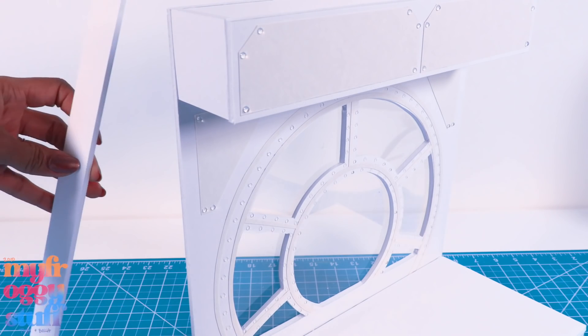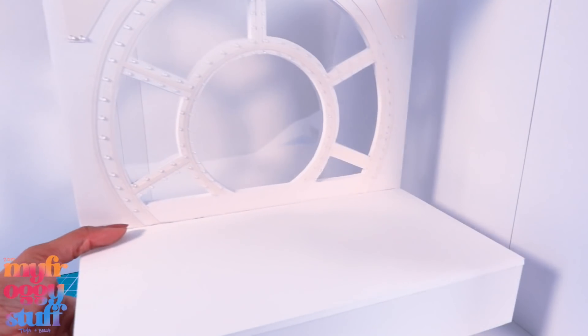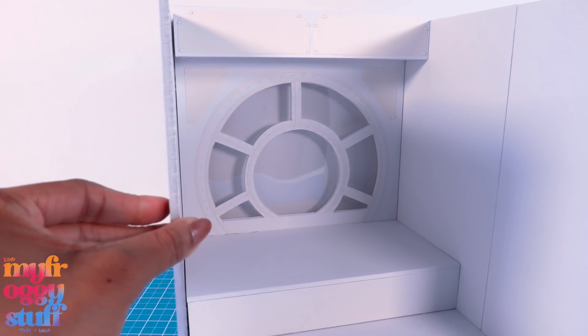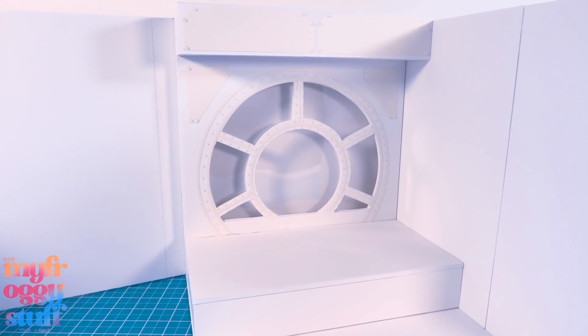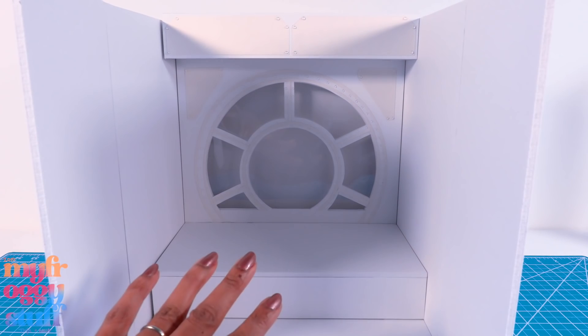We're using a lot of poster board - I totally forgot to add that to the supply list. I cut a one inch piece of foam board and glue it to the back. Let's glue it into the room, making sure the side can still open and close.